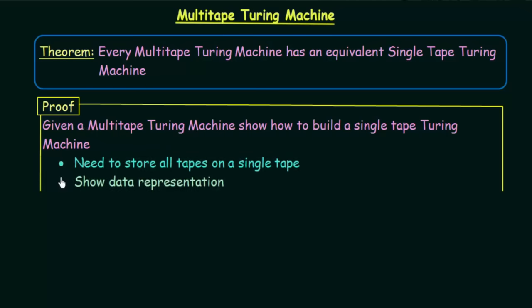The first step in proving this is that we need to store all tapes on a single tape and show its data representation. In multi-tape Turing machines there is more than one tape, but in the single-tape Turing machine we have only a single tape. So all the multiple tapes need to be stored on a single tape somehow.